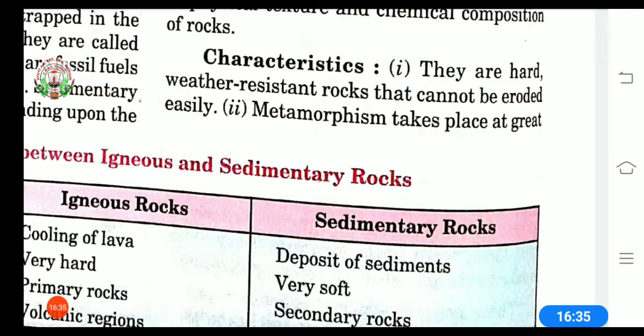Second is metamorphism takes place at a great depth in the earth's interior under conditions of intense temperature and pressure. This happens in the very depth of the earth's interior because of the temperature and the pressure.